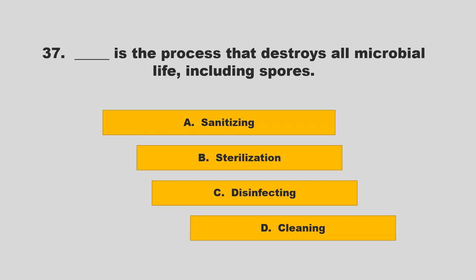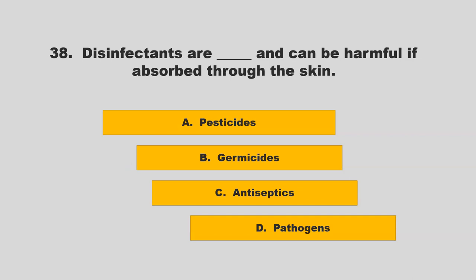Blank is the process that destroys all microbial life including spores. Options: sanitizing, sterilization, disinfecting, or cleaning. The correct answer is B: sterilization.